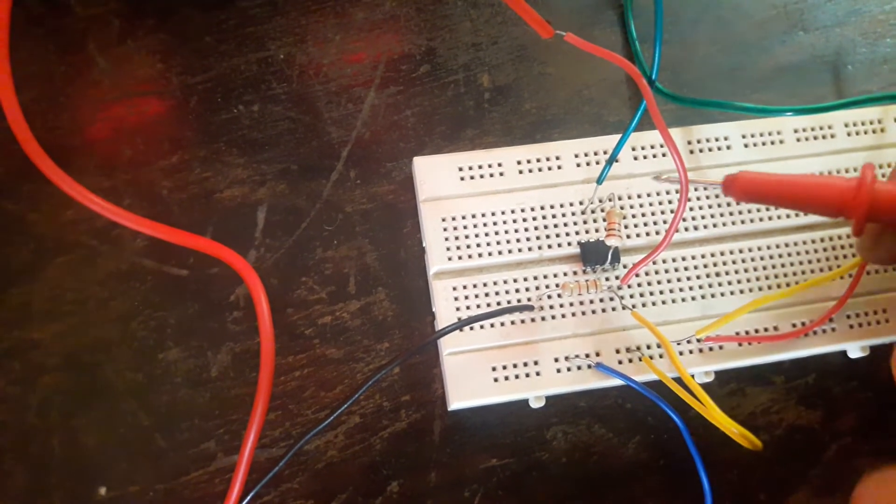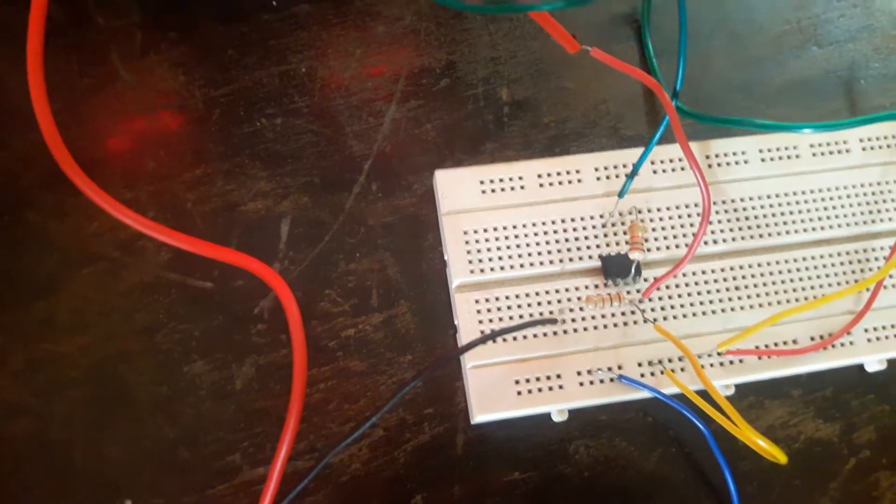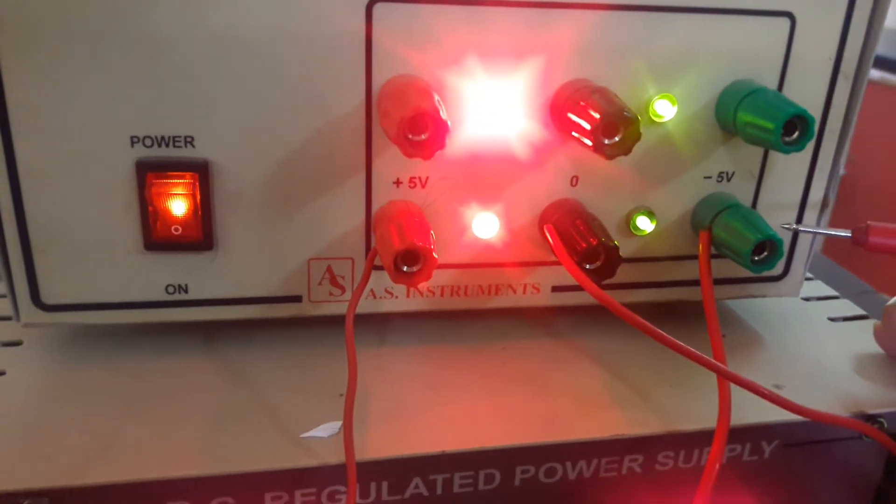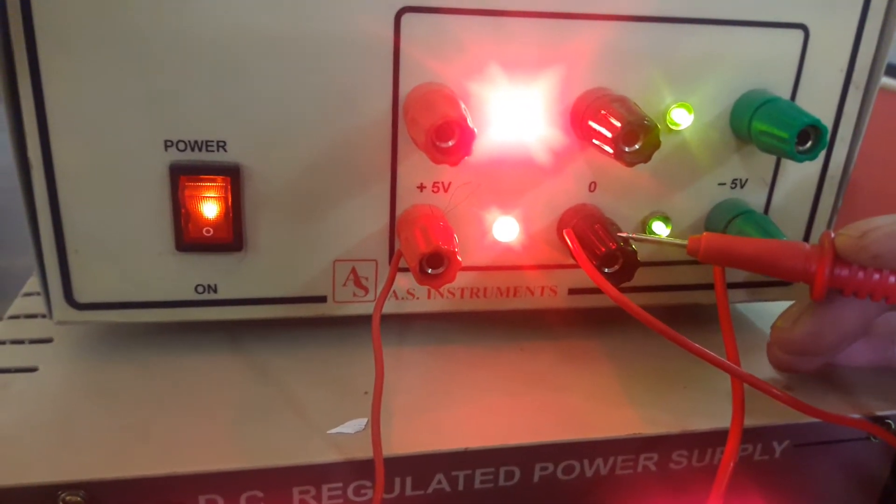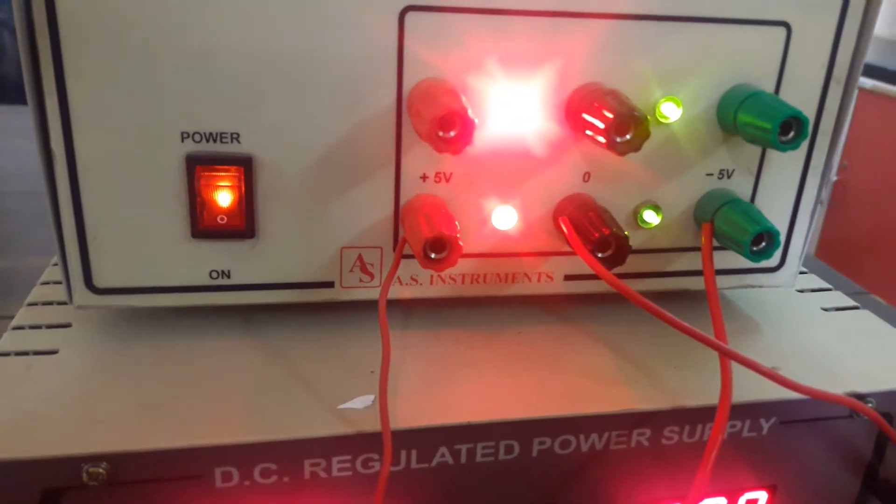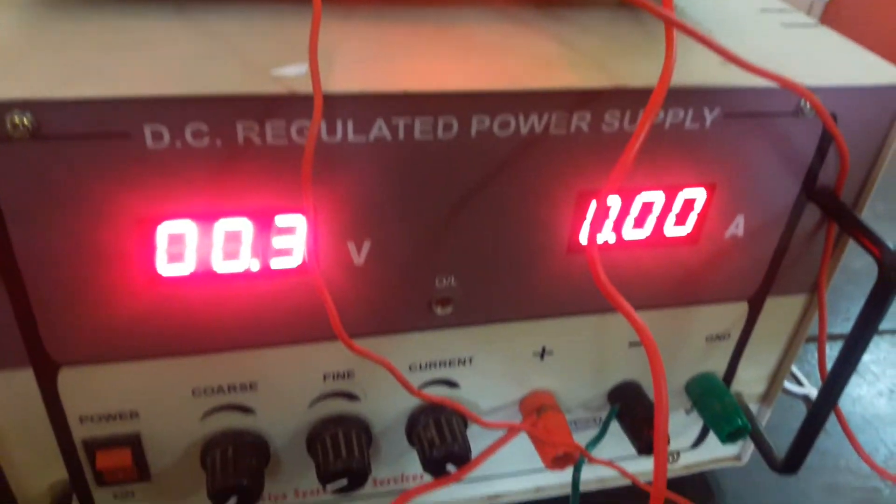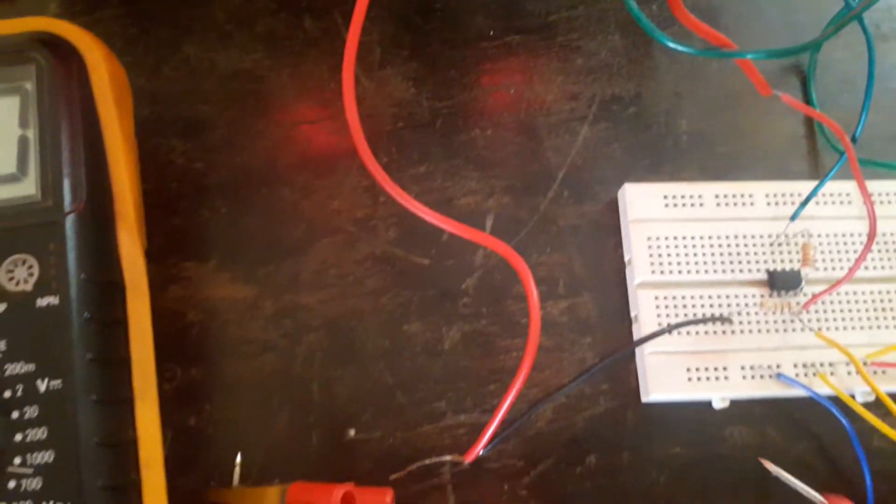And pin 7 is given to plus 5 volts. Pin 4 is given to minus 5 and this terminal is grounded. Now I will measure the input voltage and output voltage in this one.